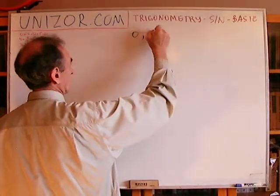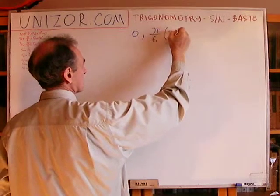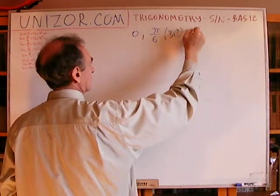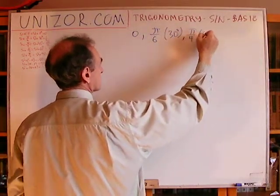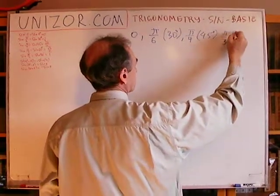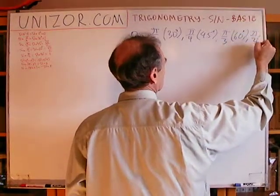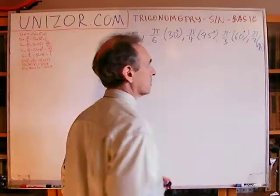π over 6, which is 30 degrees, π over 4, which is 45 degrees, π over 3, which is 60 degrees, and π over 2, which is 90 degrees.